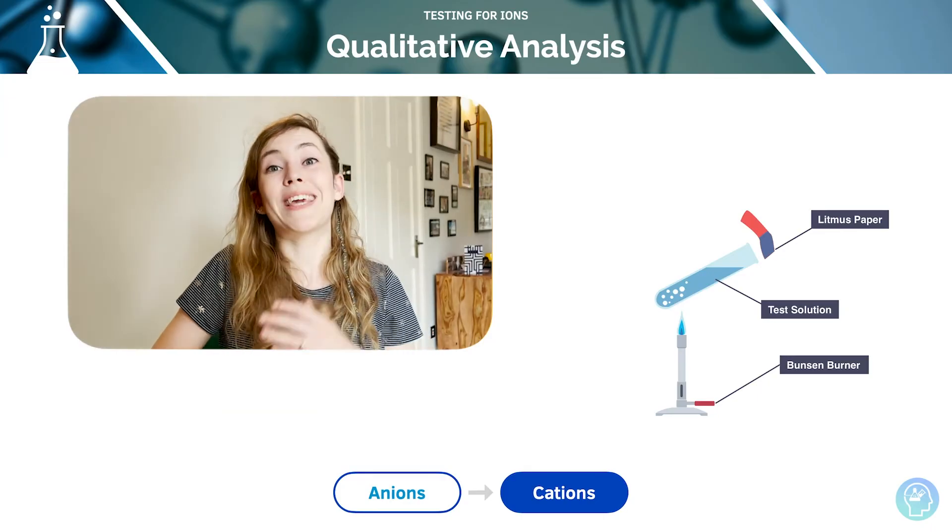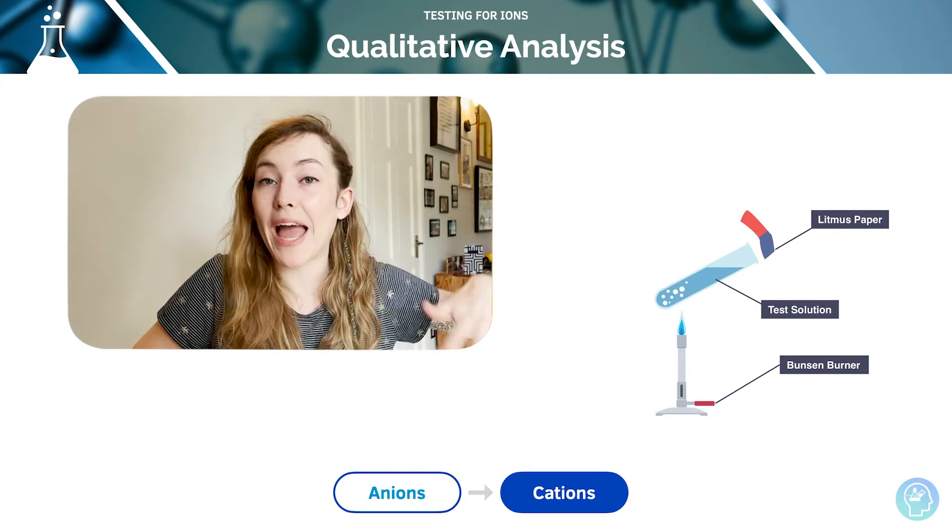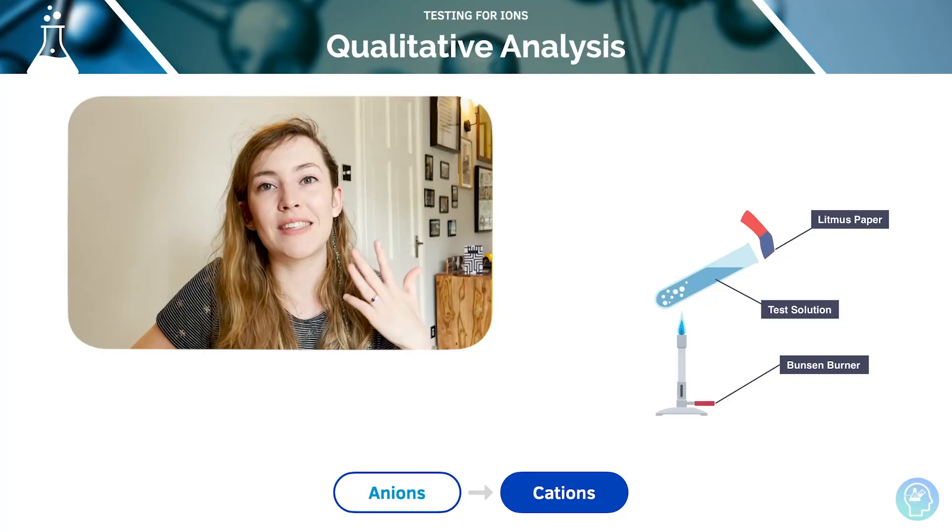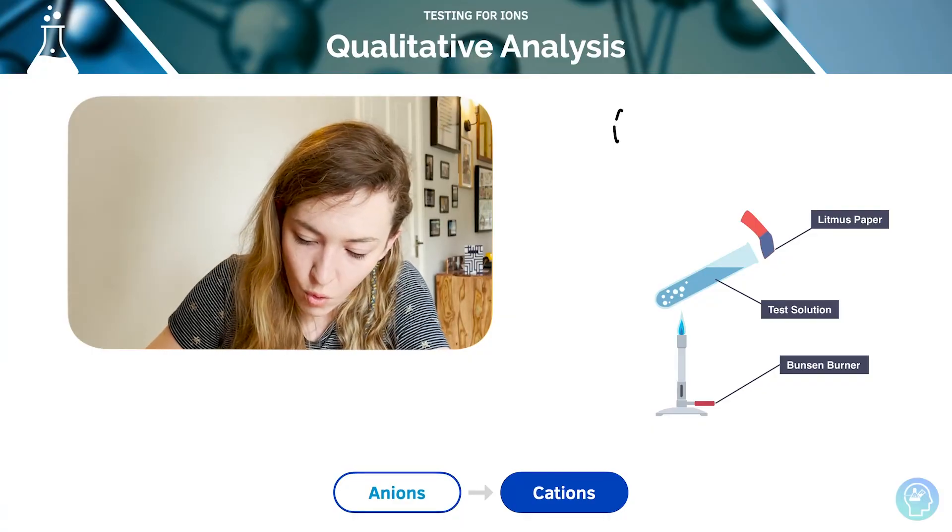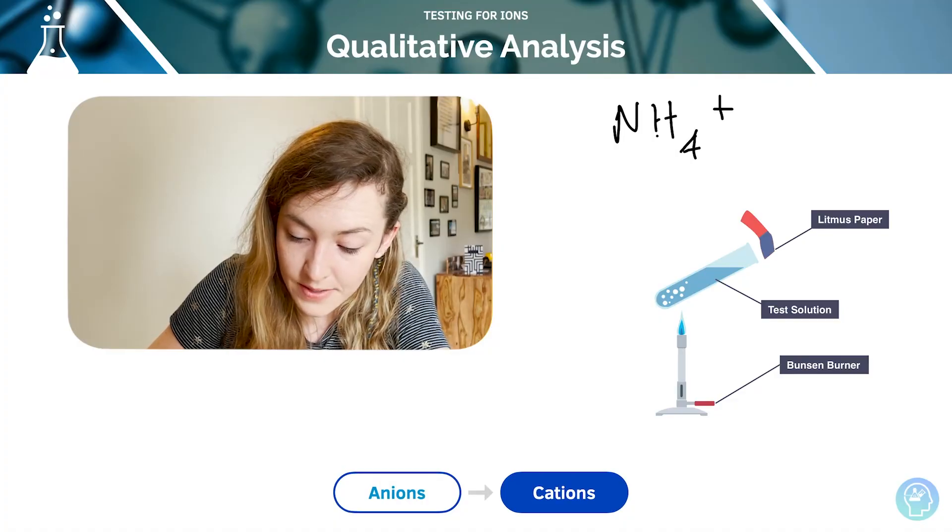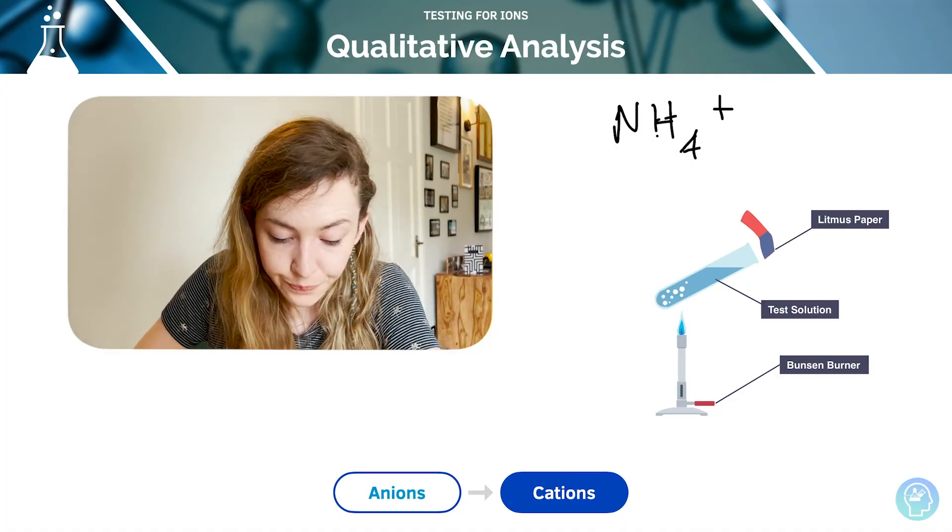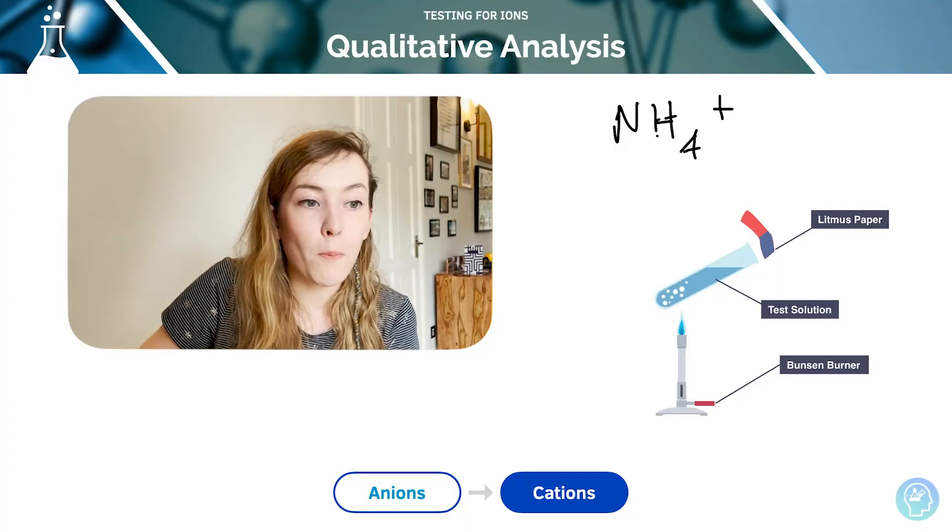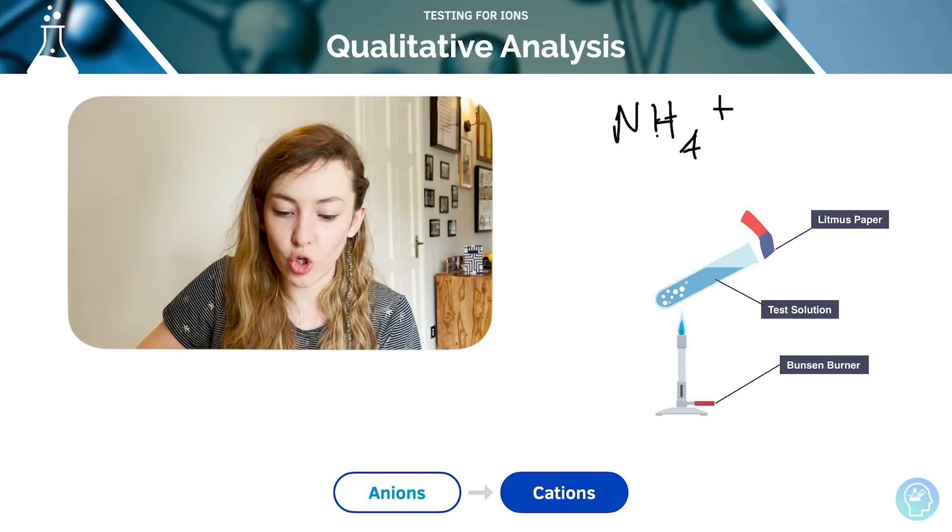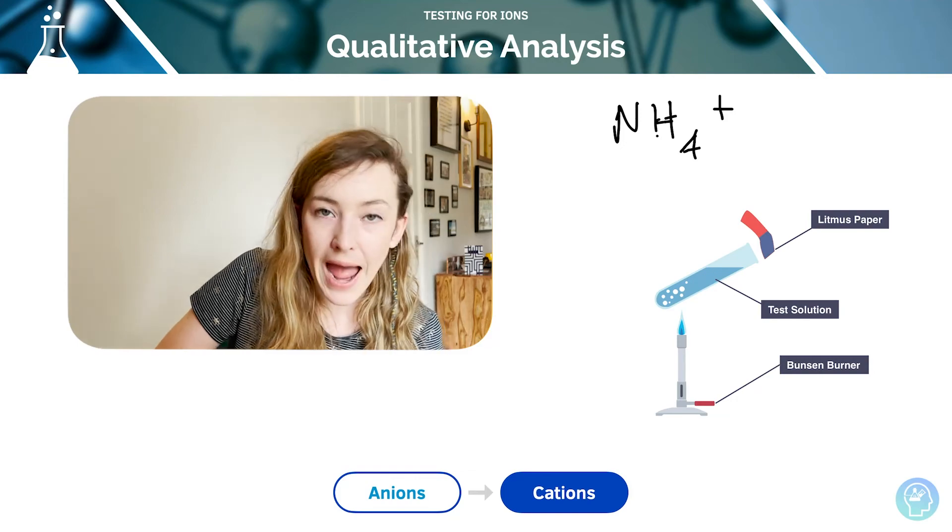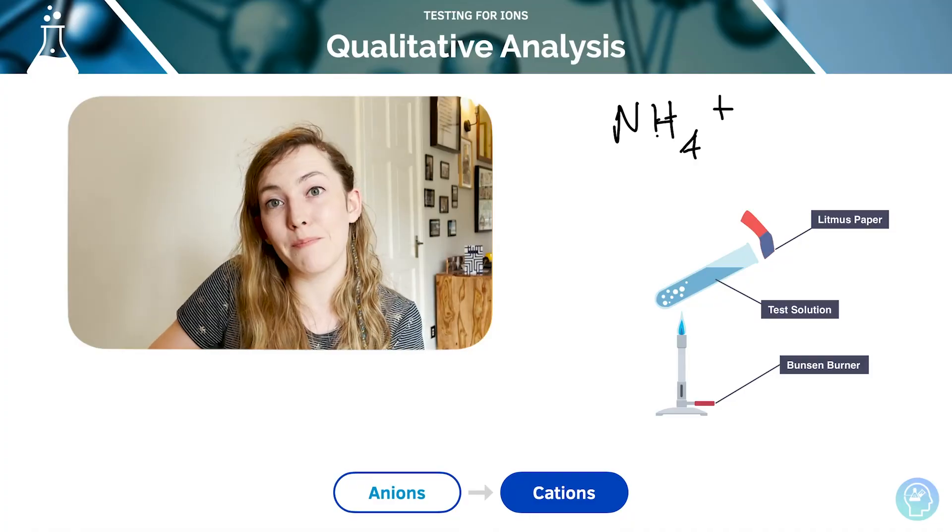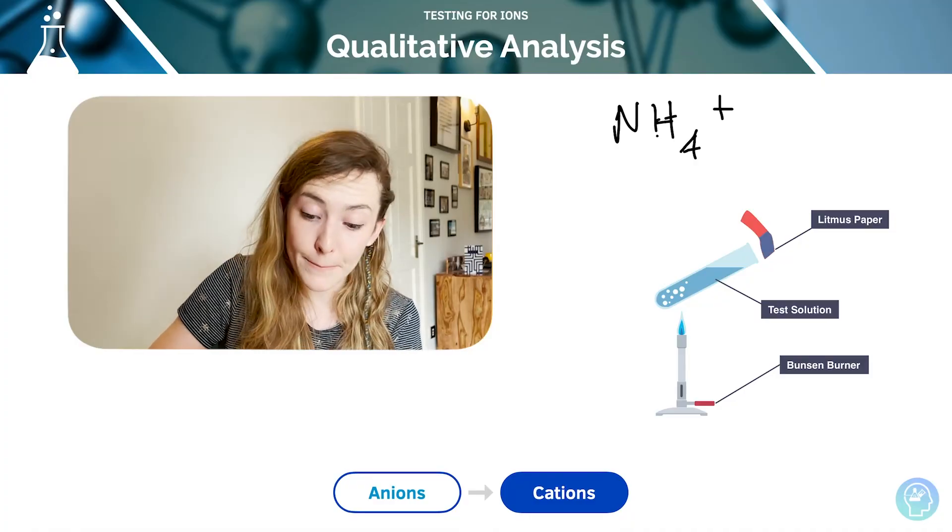Now we're moving on to the cation that you need to know. Those are the three anions: carbonate, sulfate, and halide ion test. This is now a cation. We're testing for NH4+, the ammonium ion. They can be tested by mixing the unknown compound with warm dilute sodium hydroxide solution. We're going to give off ammonia gas when we do that reaction.